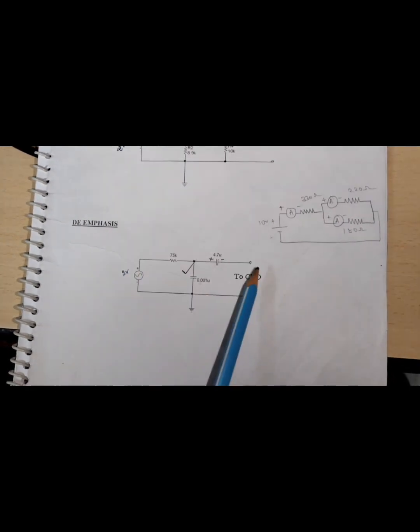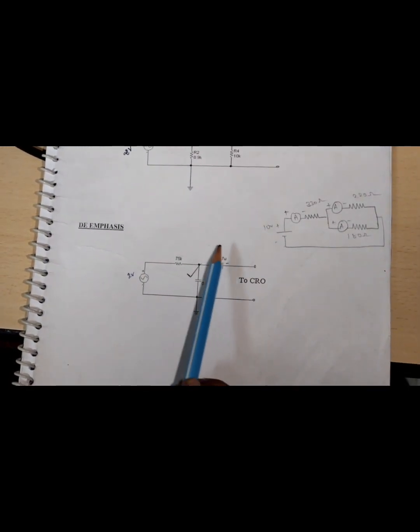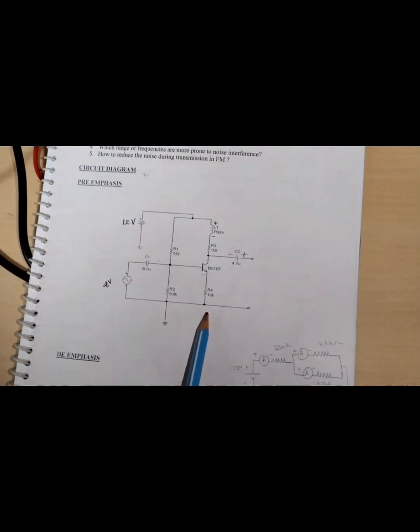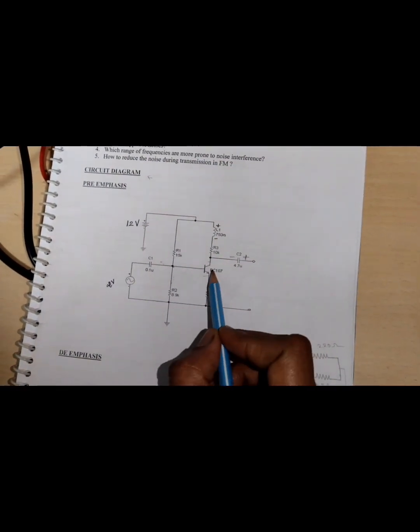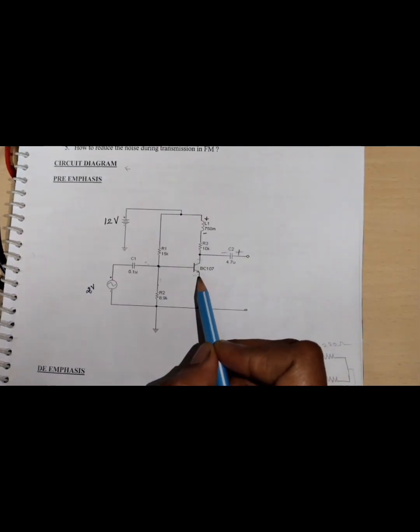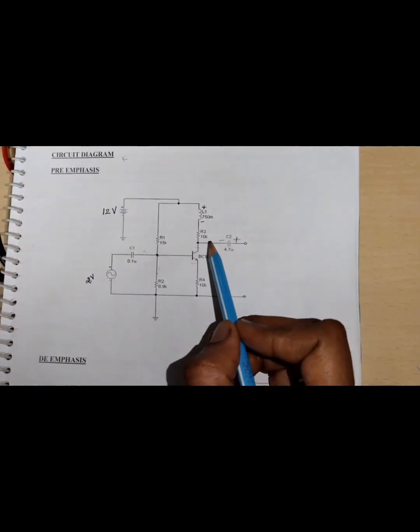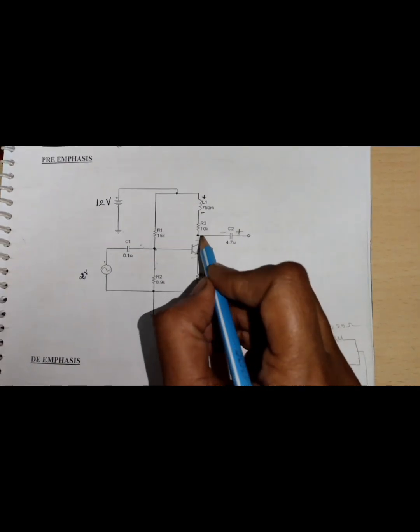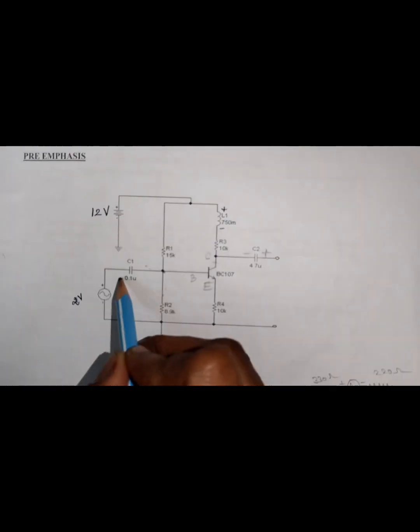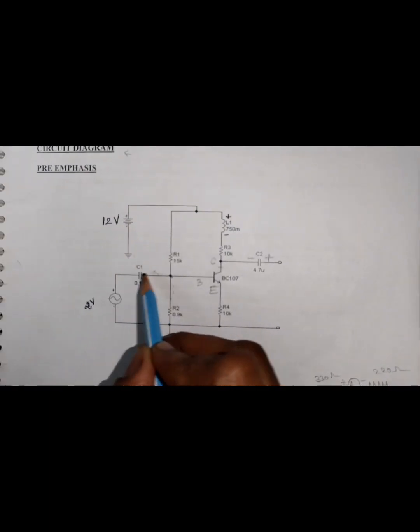On the receiver side we are using a de-emphasis circuit to de-boost the amplitude of the modulating signal. So let us study the circuit connection for pre-emphasis. Here we are using a BC107 NPN type BJT, connecting a 10 kilo-ohm resistance from the collector terminal and a 10 kilo-ohm resistor from emitter to ground, and a 0.1 microfarad capacitor connected to the base.